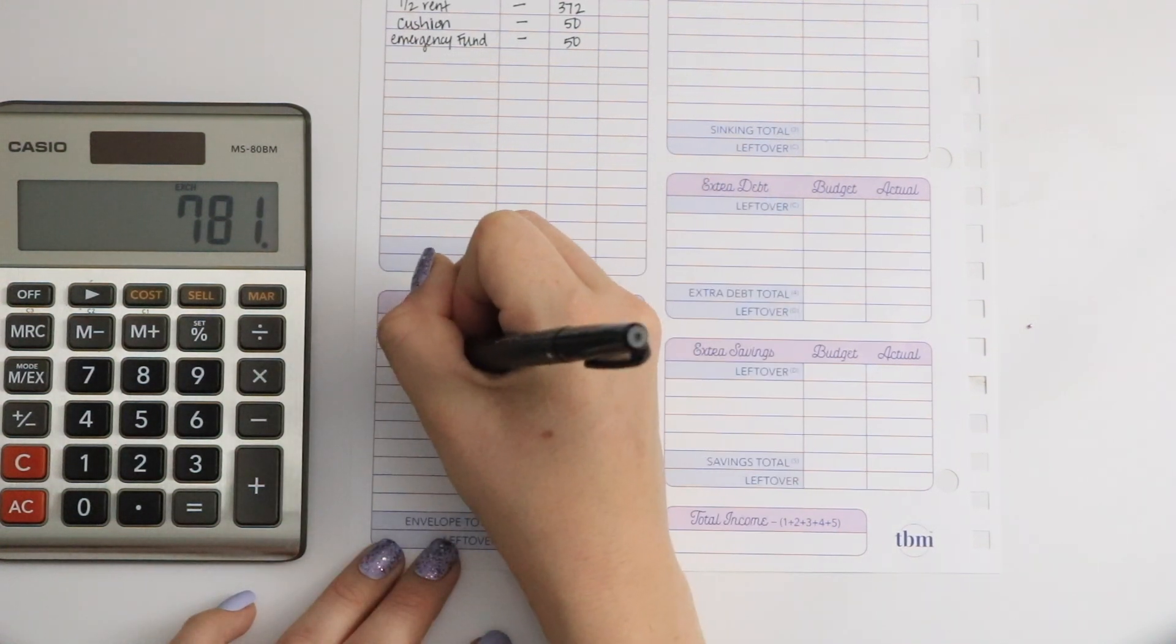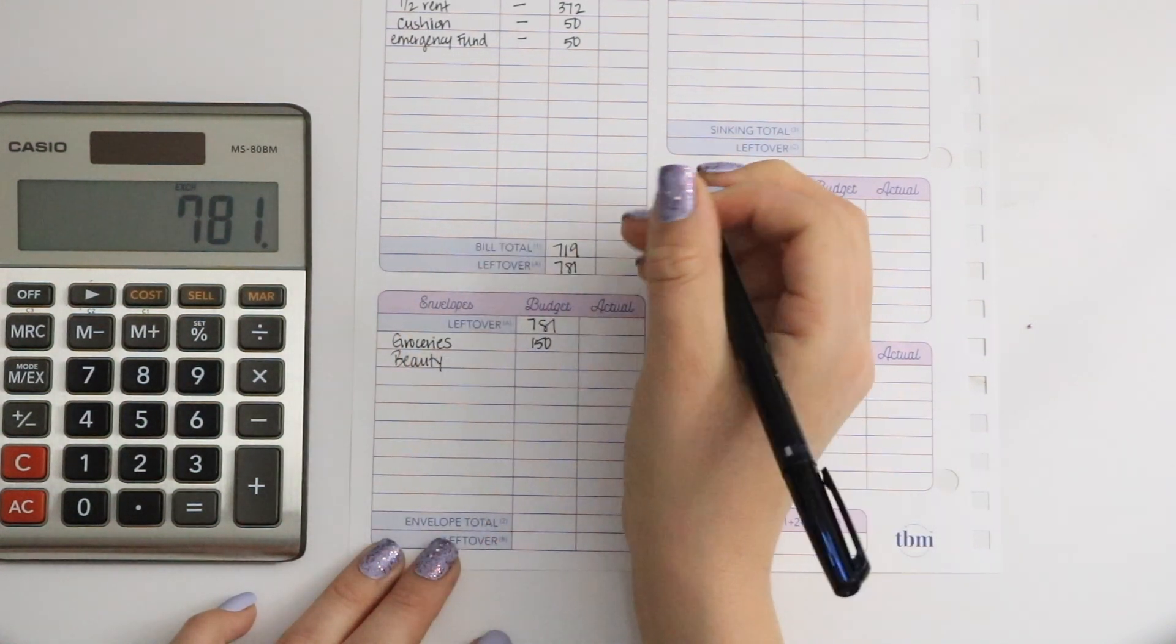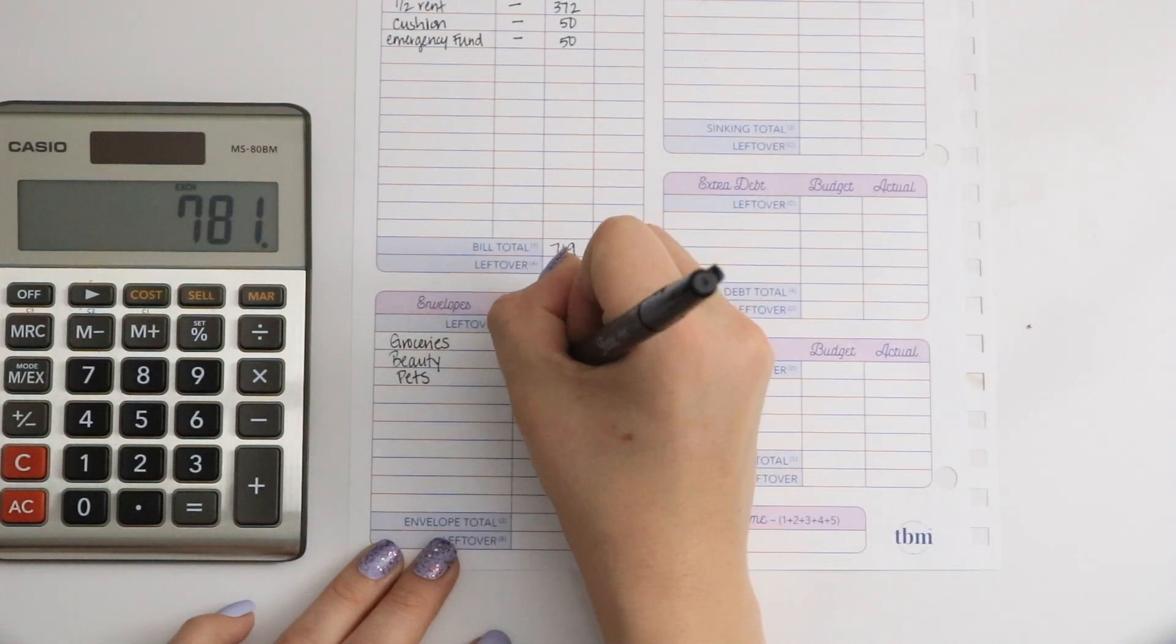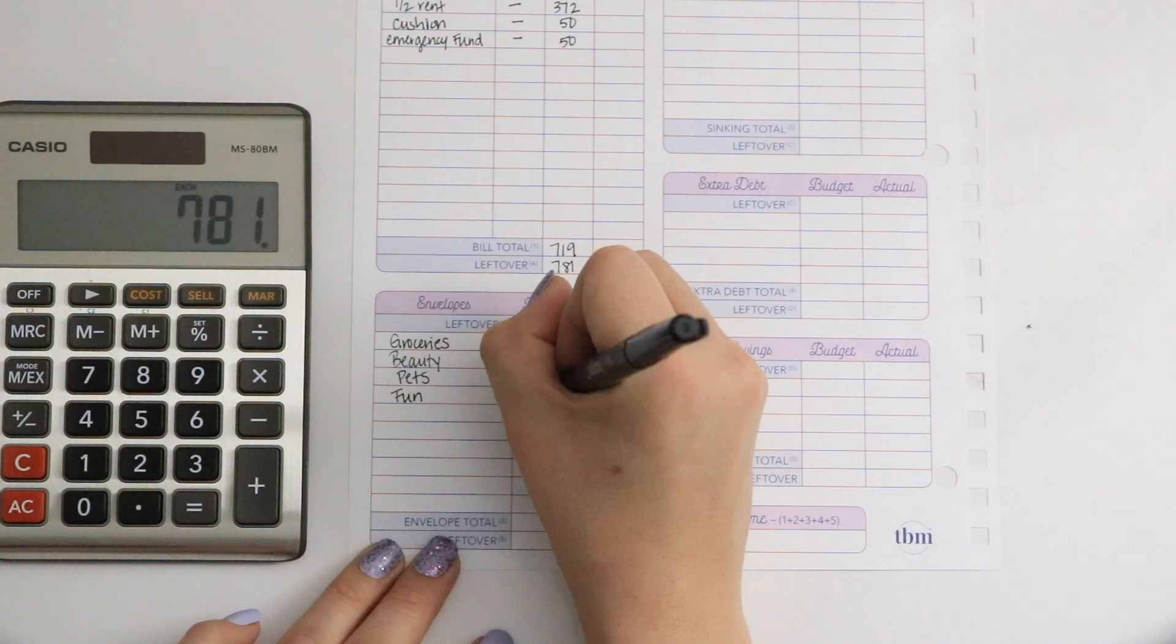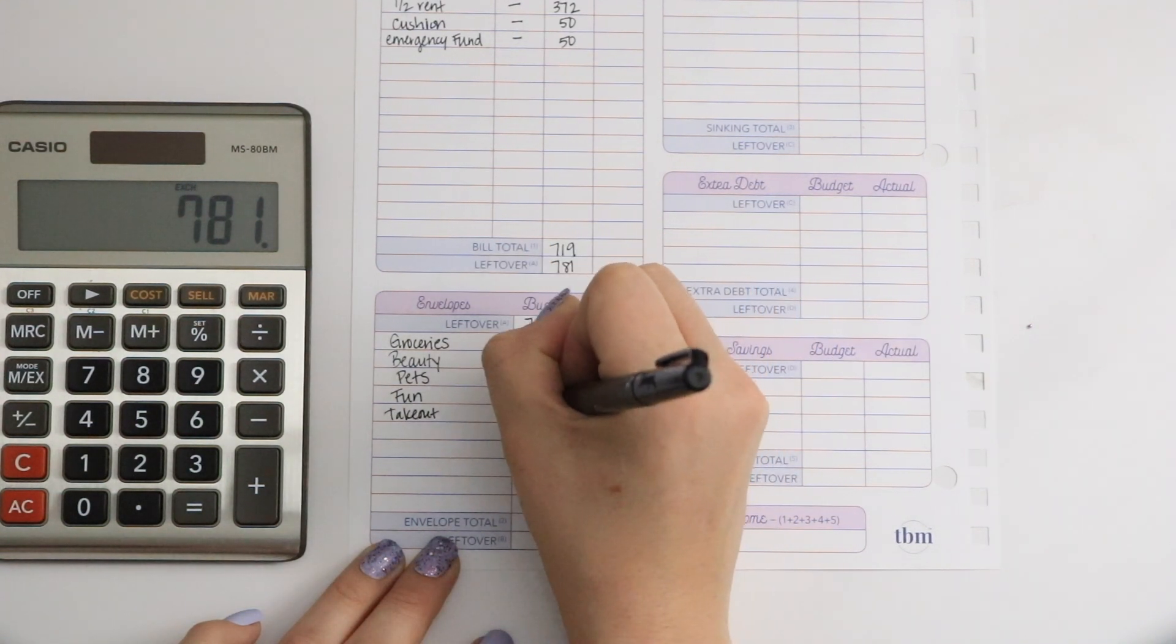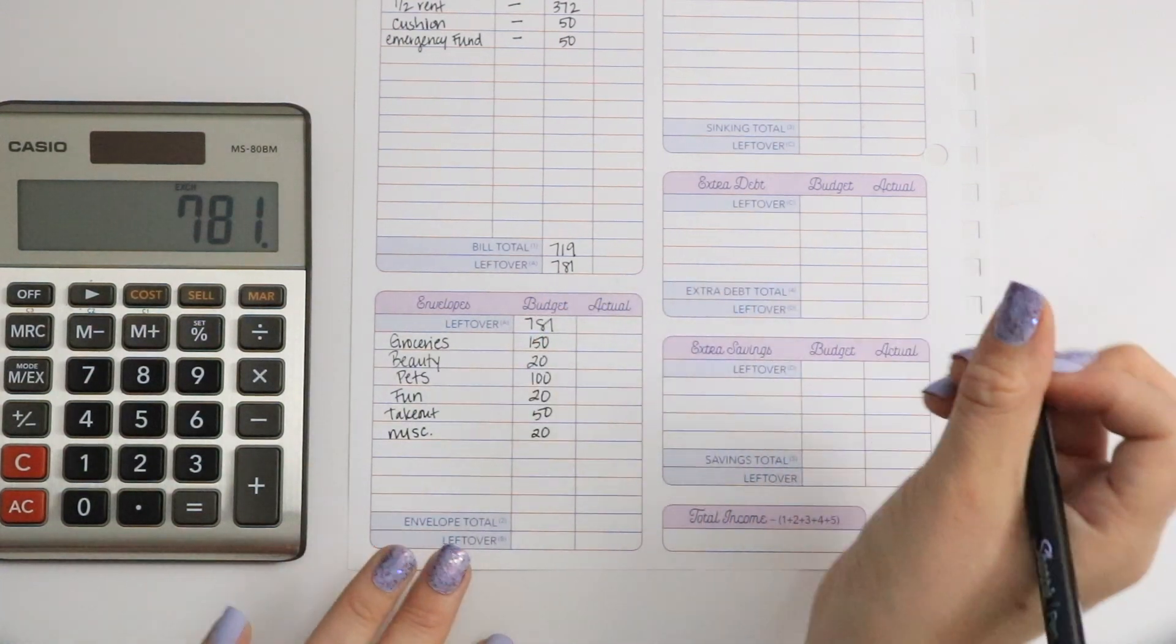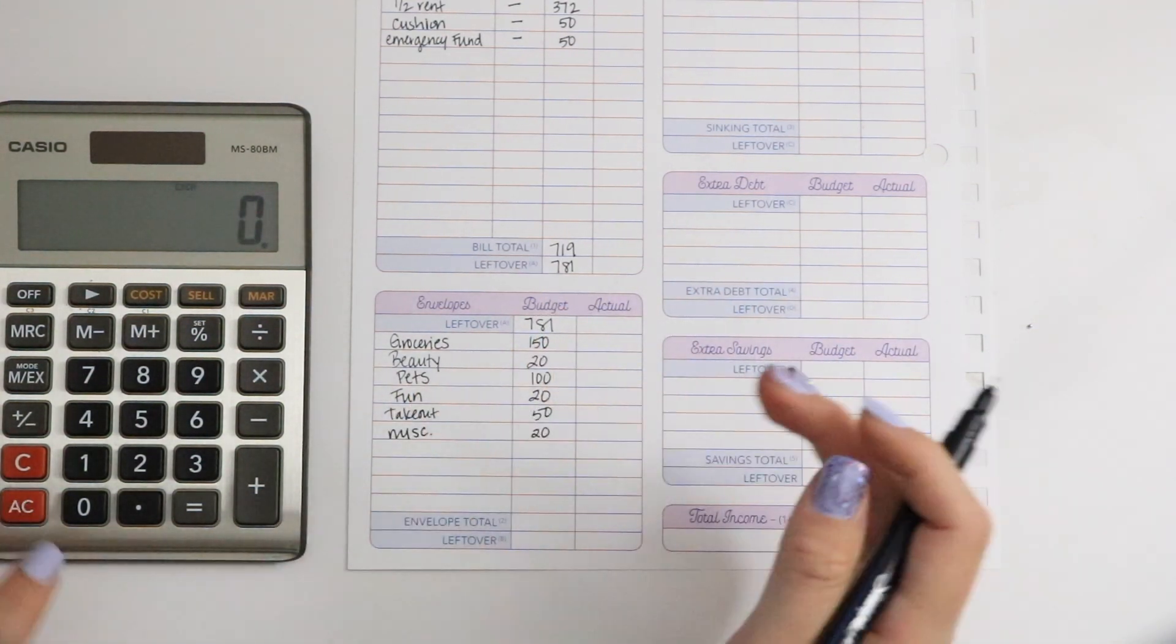Then we have our beauty, I'm adding $20. Pets, $100. Fun is $20. Takeout, $50. And miscellaneous, I'm adding $20.